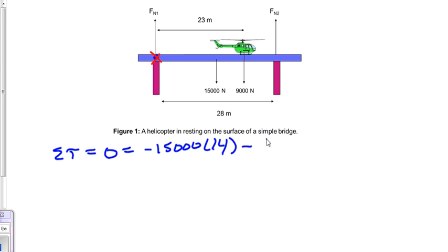Minus then the 9,000. That's also causing clockwise torque, and that's 23 meters from the point of rotation. And we have one more torque caused by the force normal 2. So plus force normal 2.